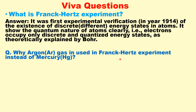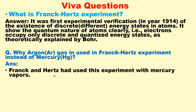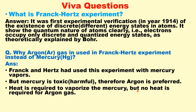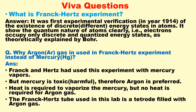Why is argon gas used in the Frank-Hertz experiment instead of mercury? Frank and Hertz originally performed this experiment with mercury vapors, but mercury is toxic and harmful. Therefore argon is preferred. Additionally, heat is required to vaporize mercury, but in the case of argon there is no need for any heat or extra thermal arrangement. The Frank-Hertz tube used in this lab is a tetrode filled with argon gas, but in other laboratories neon gas or mercury vapors may also be used.